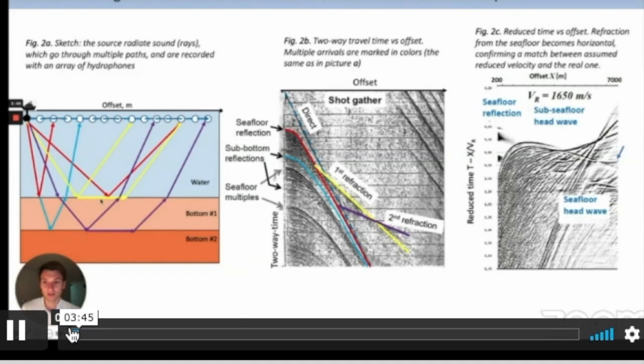But what happens if sound speed here in the bottom one is low? If it's, let's say, 1550 meters per second or if it's 1600 meters per second, then critical angle will increase dramatically. And we will simply not see this refraction on the horizontal line array. In order to see it, we need to have 20 kilometers long antenna, which is nearly impossible. And also, what happens if there is a gradient in the bottom? The sediment is compacting and sound speed may increase with bottom depth. This method will not work.